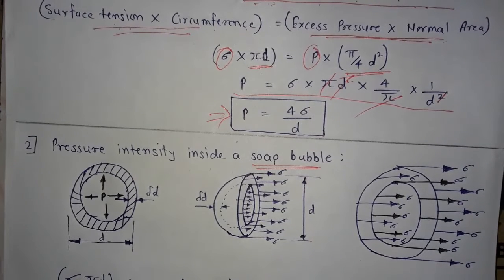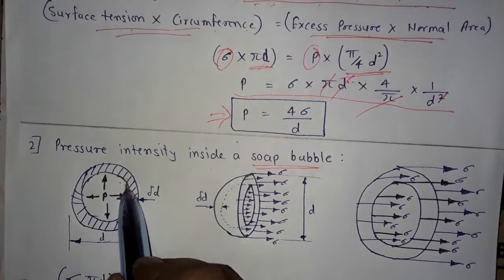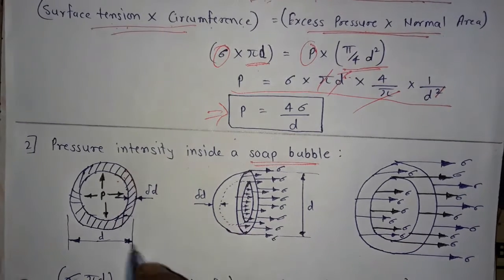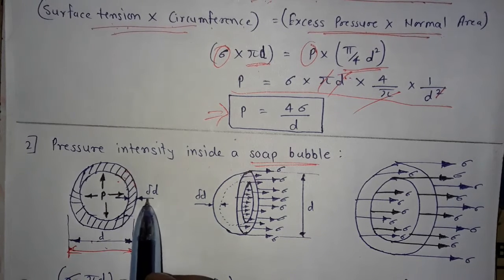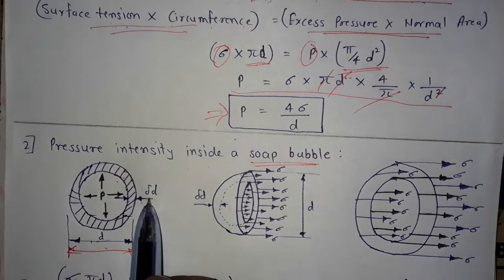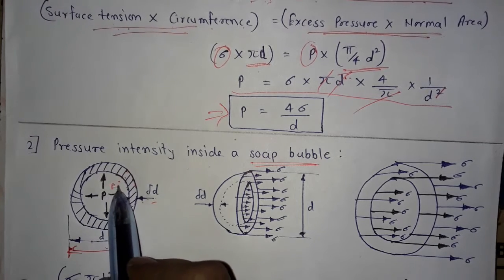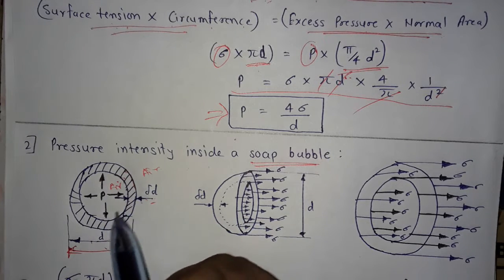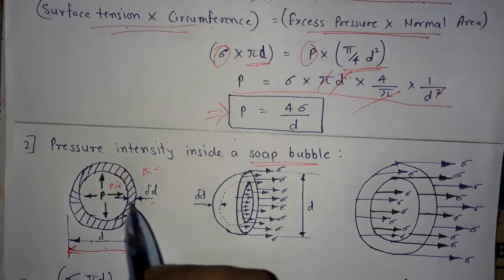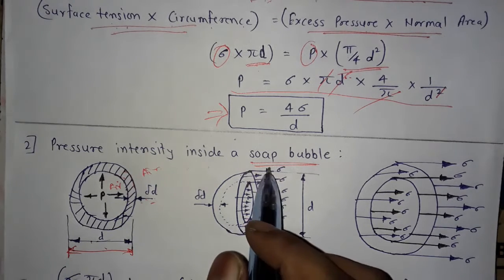Next, pressure intensity inside a soap bubble. Here, this is a cross-section of the soap bubble — it has an inside diameter and an outside diameter. This is the outside diameter, and this is the thickness of the liquid film given by δd. Inside the soap bubble there is air, and outside also there is air, because it is like a hollow sphere.